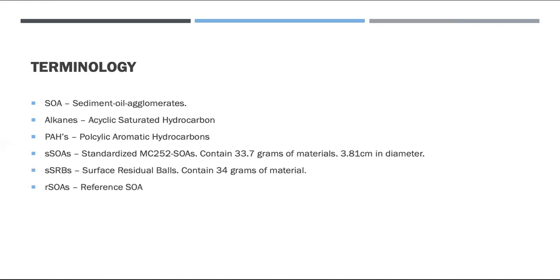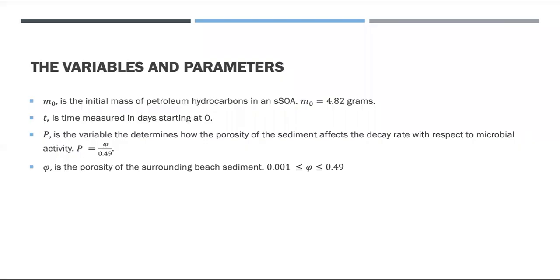The SOAs contained in total 33.7 grams, but in our model we will be looking primarily at what makes up the petroleum, and that being the alkanes, PAHs, and carbons. We started at time zero since the SOA landed at the beach surface with an initial mass of 4.82 grams.